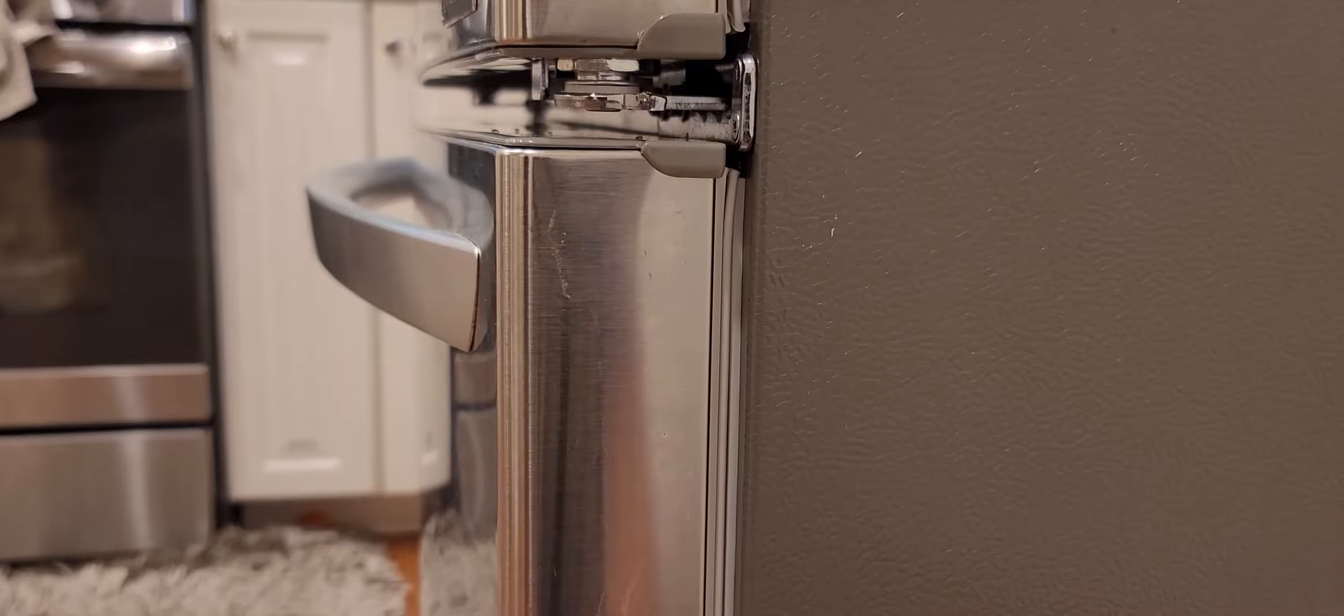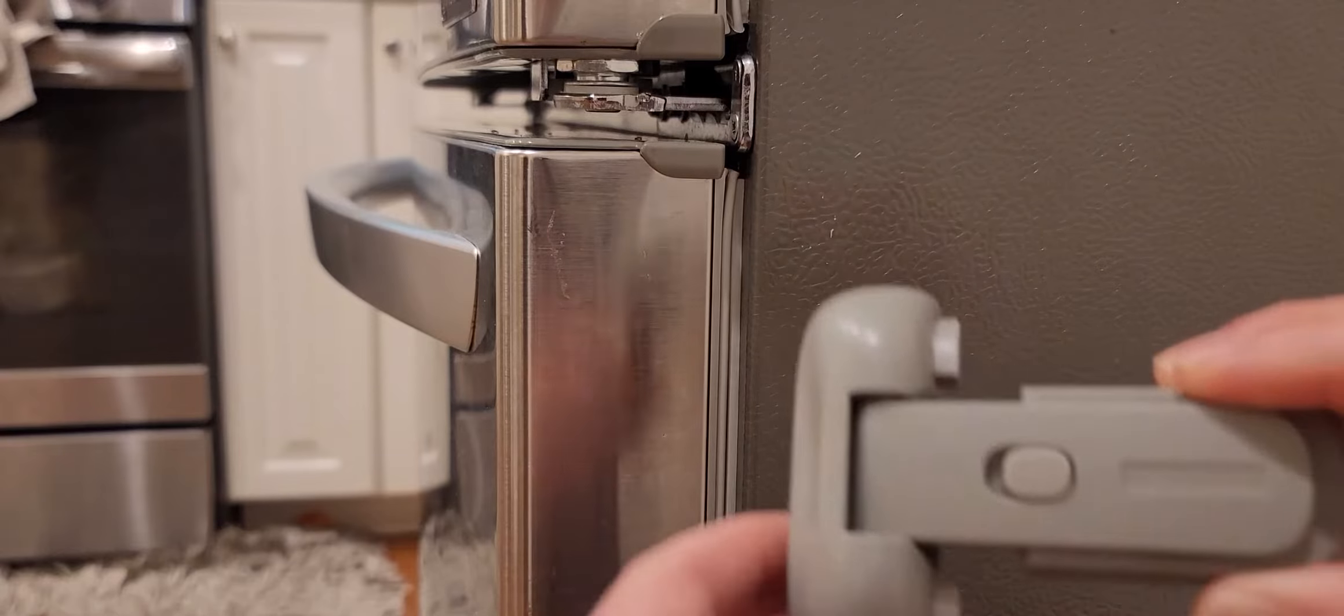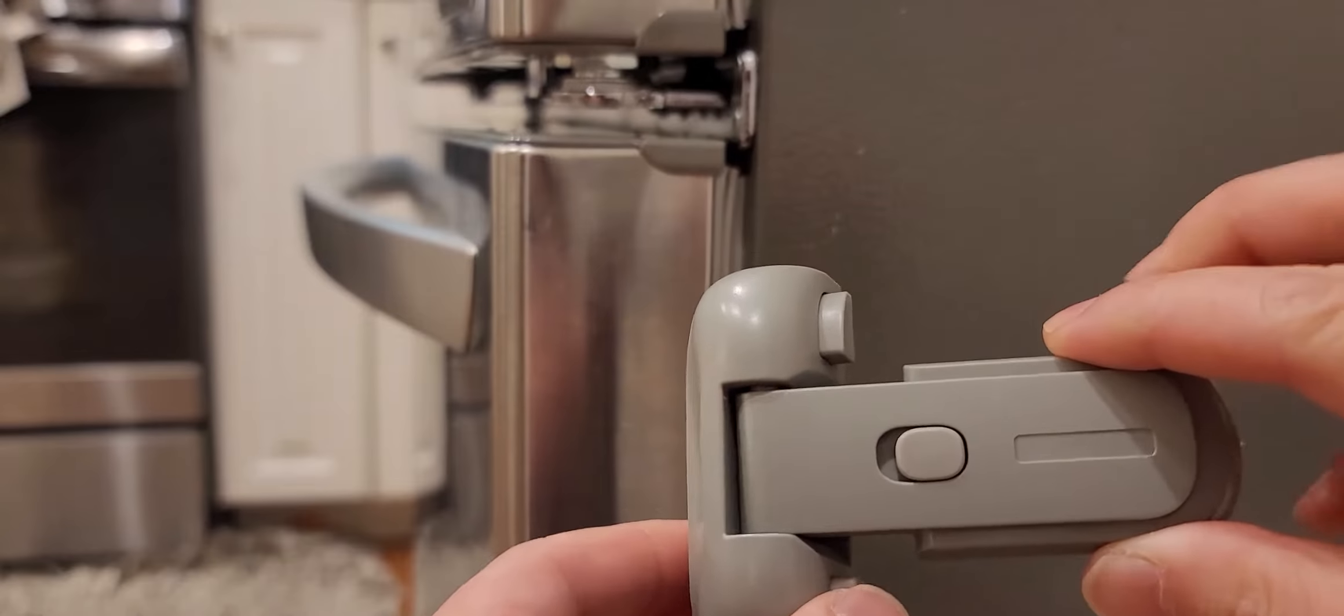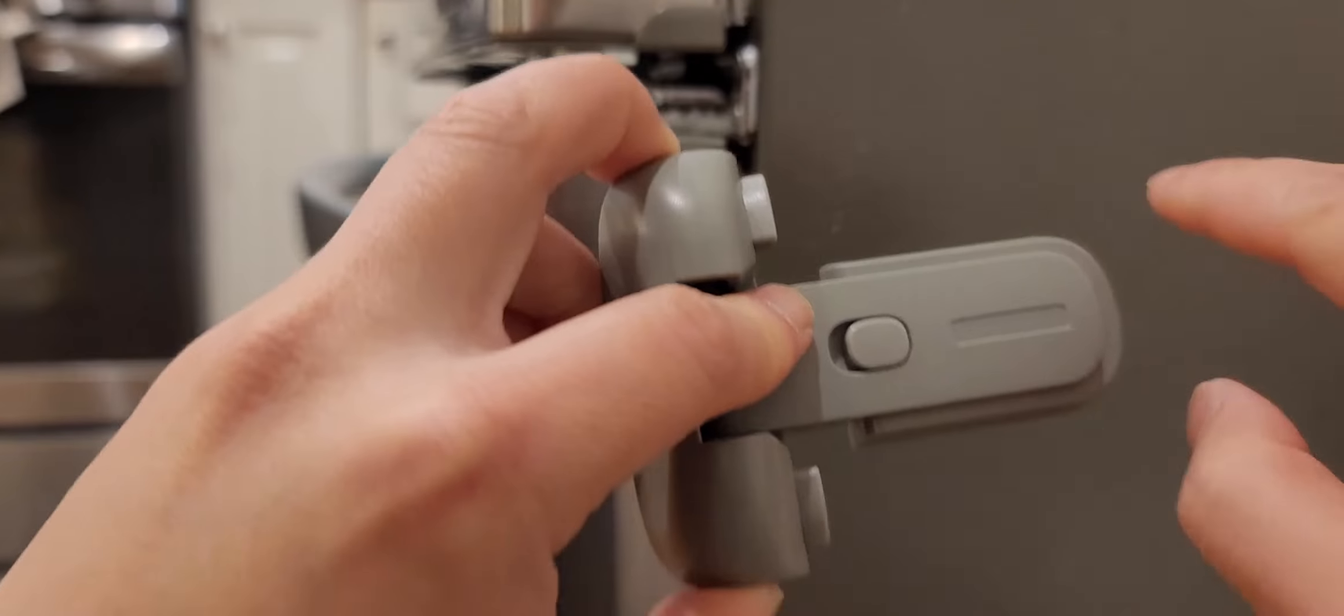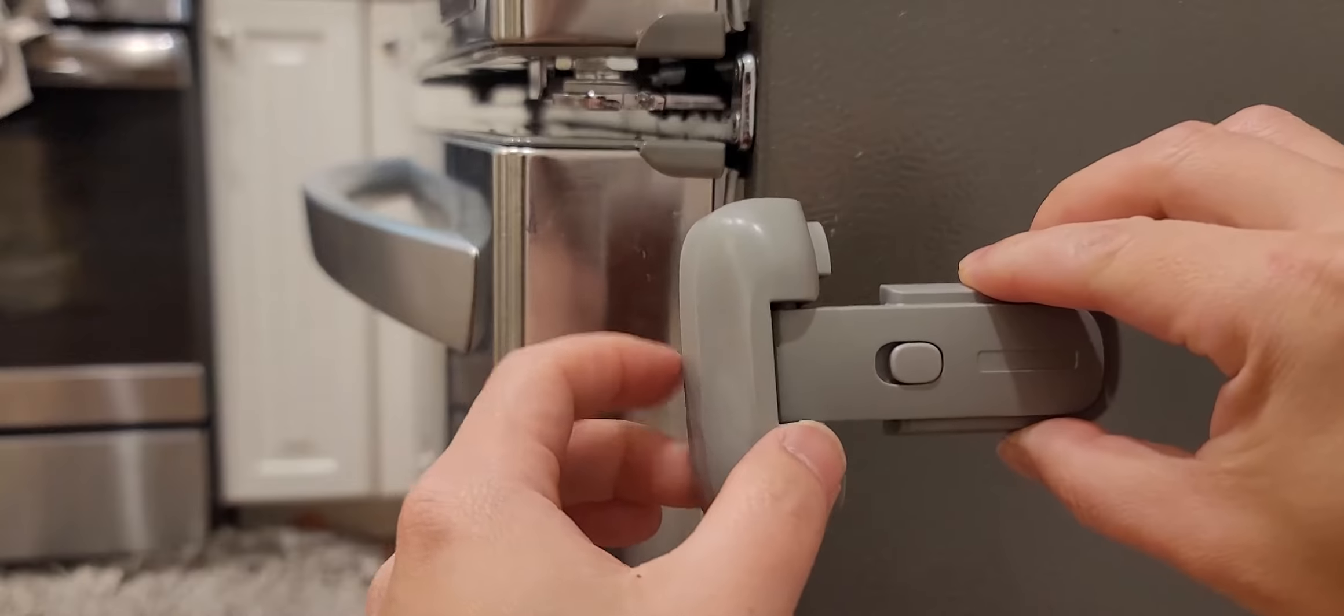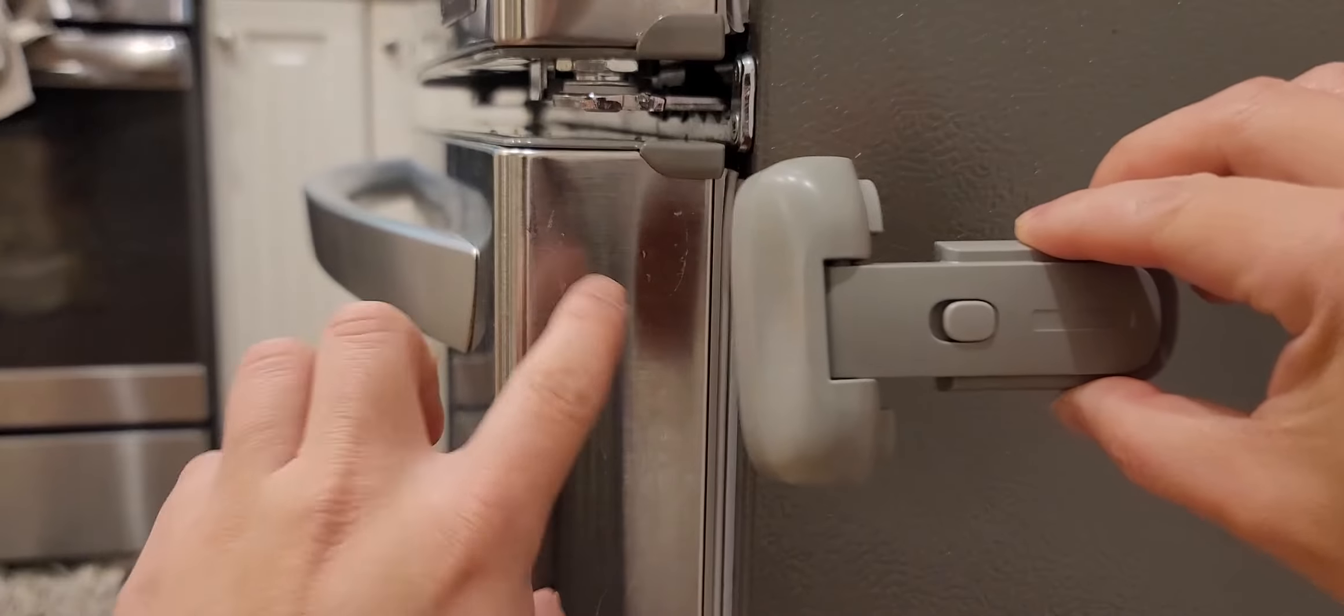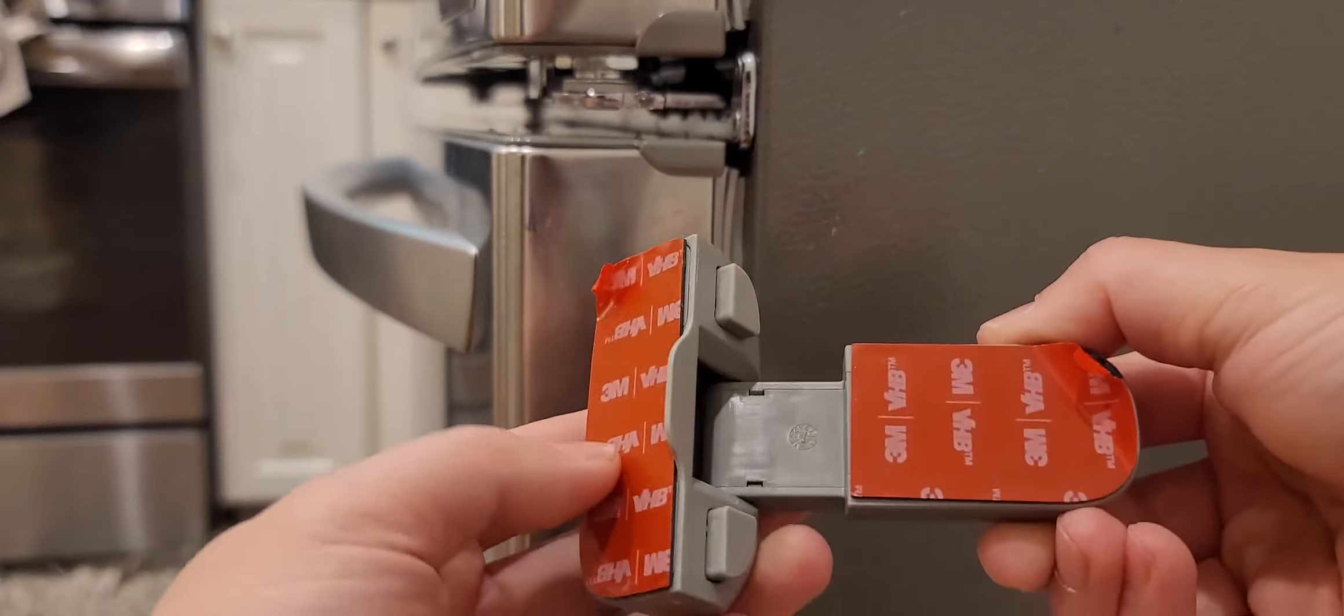Here's a quick look at this refrigerator child lock by Heart of Tafiti. This is the unit itself. It has two pieces. The long piece sticks on the refrigerator, and the horizontal piece goes under the refrigerator door. In the back there is a 3M sticky tape.